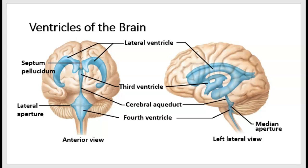We've seen that cerebral spinal fluid — commonly known as CSF — is located in the subarachnoid space that surrounds the outside of the brain. But CSF is also located within the interior of the brain inside four spaces called ventricles. These ventricles develop from the hollow cavity of that embryonic neural tube. The hollow chambers, the ventricles, are continuous with one another and connected to the outer subarachnoid space, so that CSF flows in a specific pattern within the ventricles to the subarachnoid space. Let's look at the ventricular system before we discuss the flow of CSF.